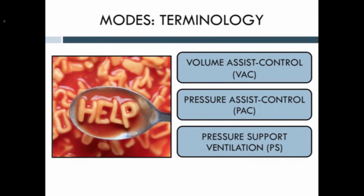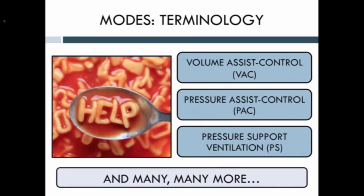There's an alphabet soup of mechanical ventilation modes available, but the three most important for you to understand are volume assist control, pressure assist control, and pressure support ventilation. There are many others you may hear people talking about, such as airway pressure release ventilation or pressure regulated volume control. You'll understand these modes much better once you understand the basic physiology behind volume assist control, pressure assist control, and pressure support ventilation.